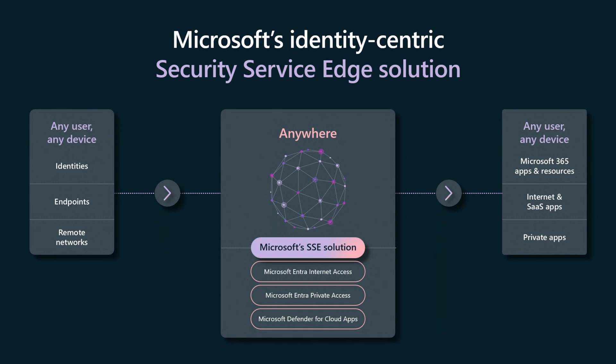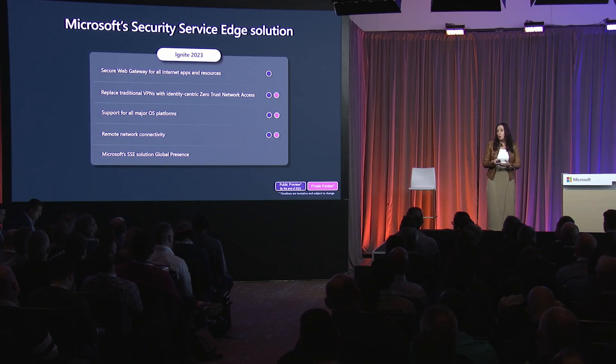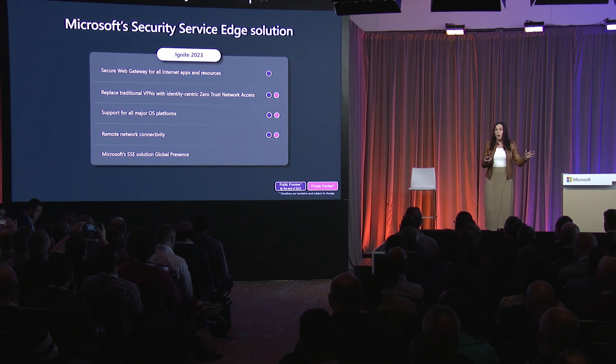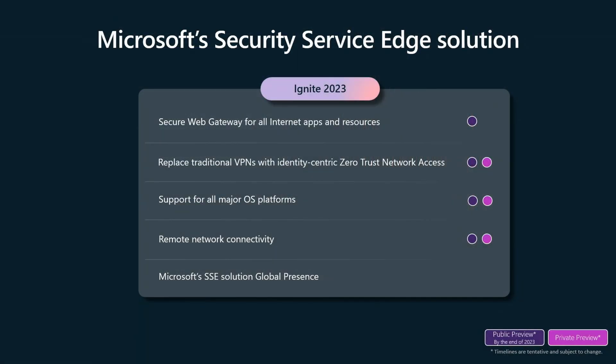We enable you to embrace access without joining the corporate network. Today we're super excited to announce several advances. In July we had a secure web gateway for M365 — today we're excited to announce secure web gateway for all destinations. We also advanced our private access capability: we had TCP support in July, we now have UDP support and private DNS. We also added cross-OS platform support — we had Windows in July, we now have Android, iOS, and Mac.